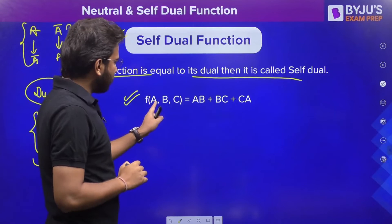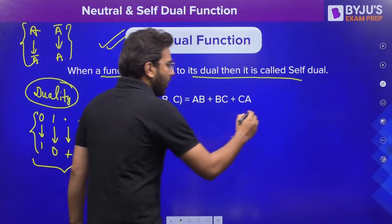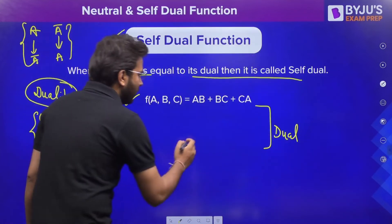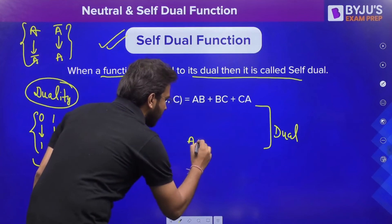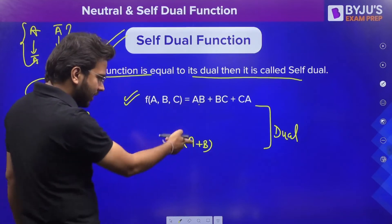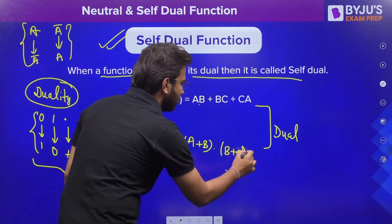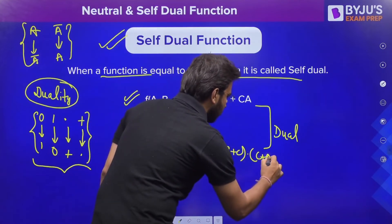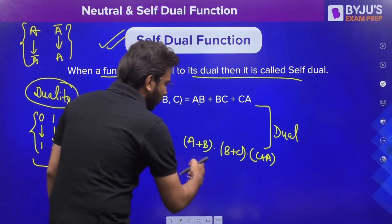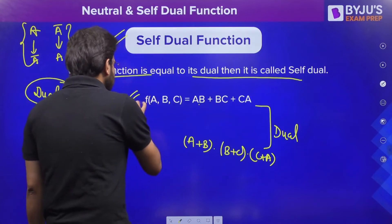Let's take one example. We have a function of three variables a, b, and c: f = ab + bc + ca. If I take the dual of this function, the AND between a and b becomes OR, and the OR becomes AND, giving us (a+b)·(b+c)·(c+a). These two functions are equal — you can simplify the dual and you will get the original function again. So this is an example of a self-dual function.